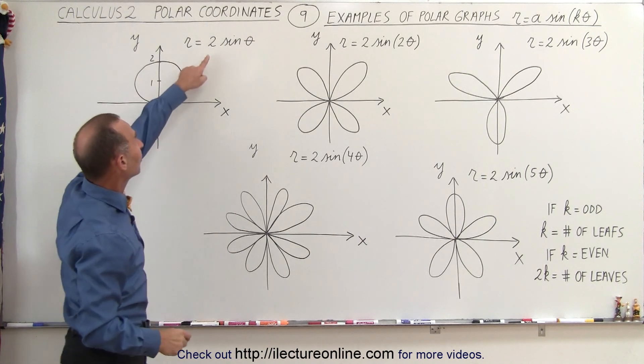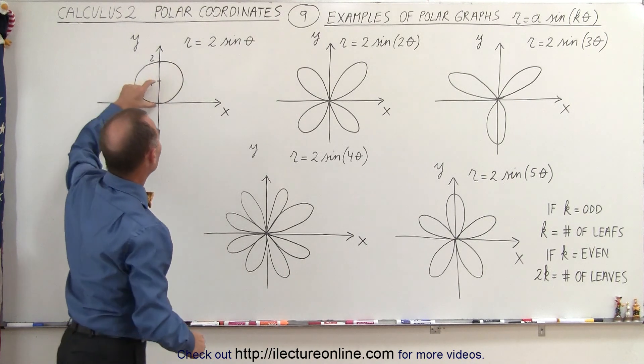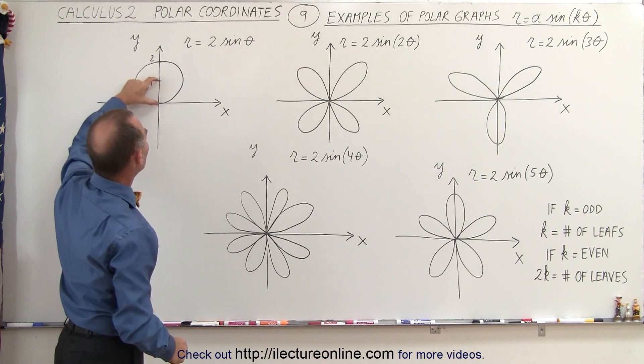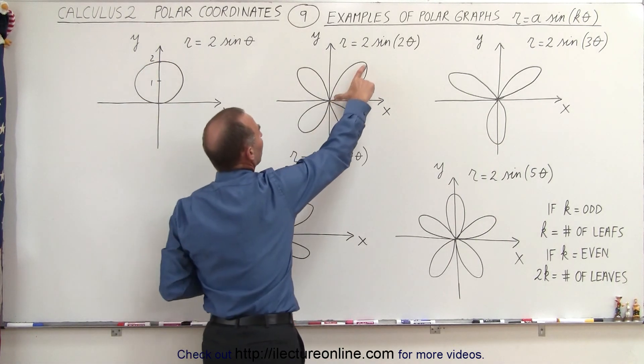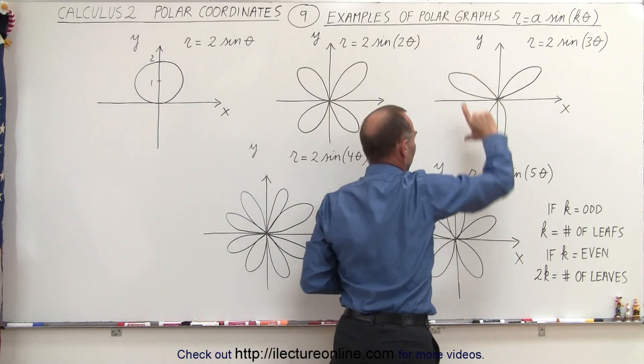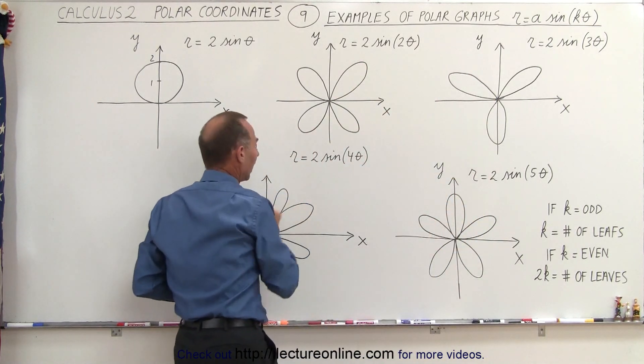Also notice that if the number is in front, like 2, then instead of the leaves only being equal to 1 in height, the leaves are now 2 in height. So in this case, the leaves would be 2 in height.